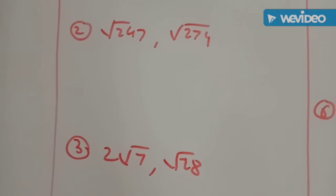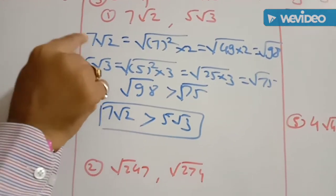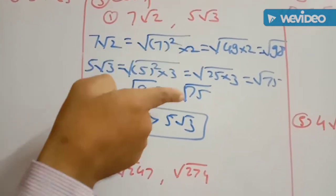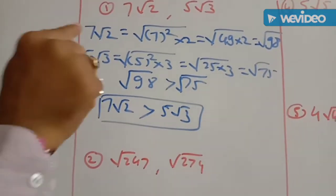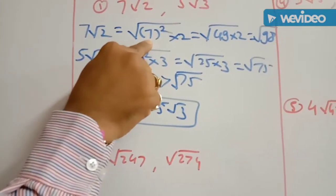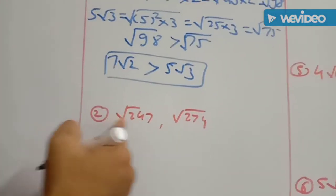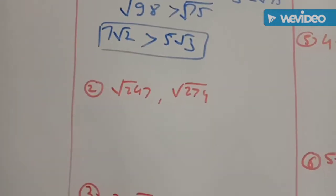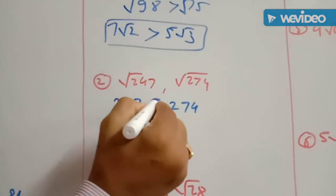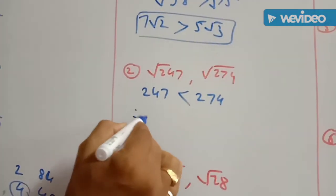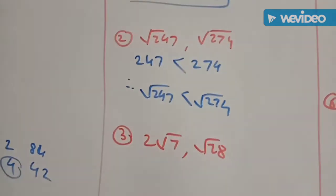For comparing, we take the coefficient (the number before the radical sign) and write it inside the radical sign by taking its square, because the order of the SIRD is 2. If the order of the SIRD is 3, we would take the cube. Second example: both SIRDs have the same order, so we directly compare the radicands 247 and 274. Since 274 is greater than 247, root of 247 is less than root of 274.